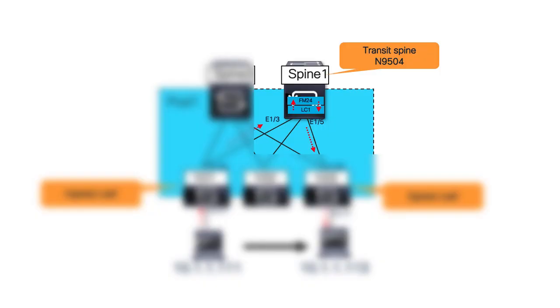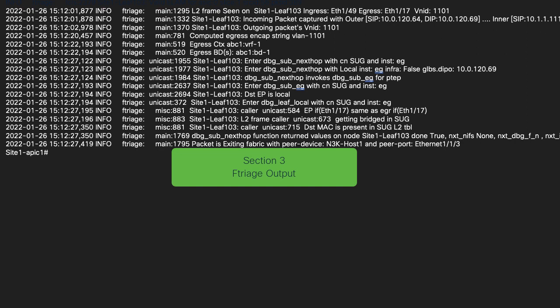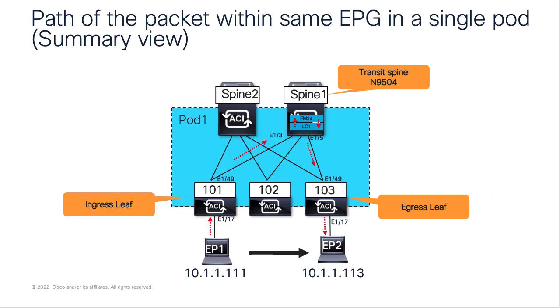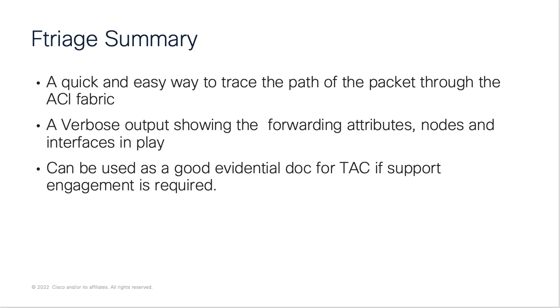The traffic then egresses out module 1 on ETH 1/5 towards the destination leaf. Another advantage of the tool is exposing the modules on the modular spine involved in the traffic path. In the third section of the output, we'll focus on the destination leaf. You will see that traffic is ingressing leaf 103 on port ETH 1/49 and egressing on port ETH 1/17 with an encap of 1101. This is a local EP in BD1 and VRF1. Topology for the egress leaf is now clear. In a nutshell, F-Triage gave a clear view of the path along with many additional attributes useful for debugging working or potentially broken flows. F-Triage is a simple command line tool for end-to-end packet tracing within the ACI fabric. A verbose output gives you a lot of pertinent details regarding nodes and interfaces that can be useful for debugging.